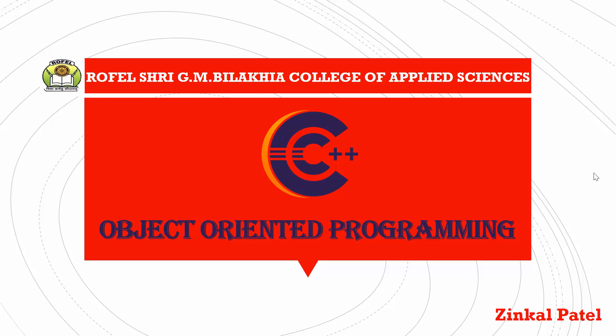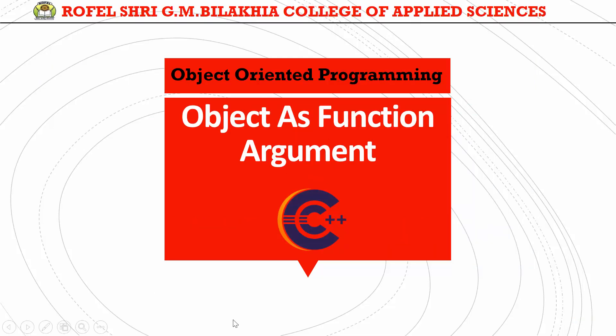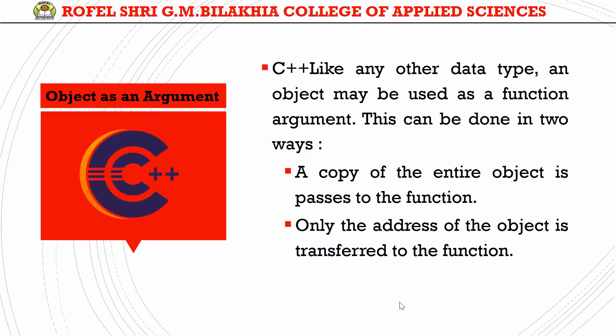Hello everyone, welcome back. In object-oriented programming, the next topic is 'object as function argument.' In C++, like any other data type, an object may be used as a function argument, and this can be done in two ways. The first way is a copy of the entire object is passed to the function, called pass by value. The second way is only the address of the object is transferred, called pass by reference.